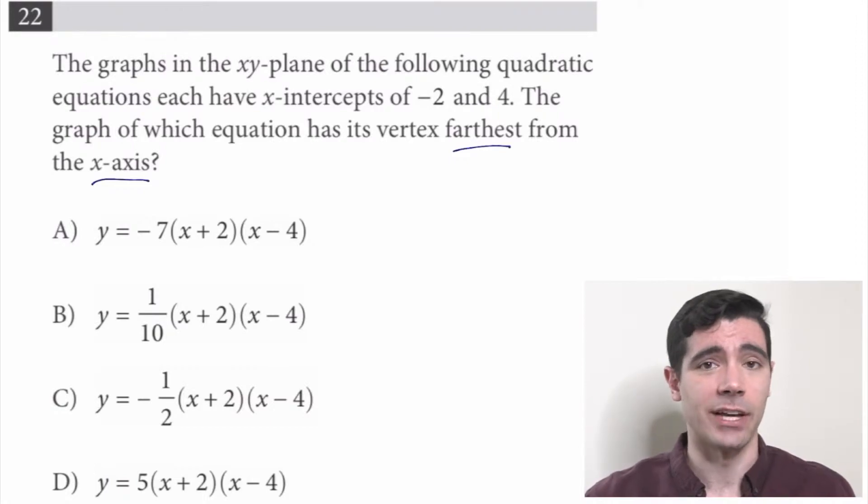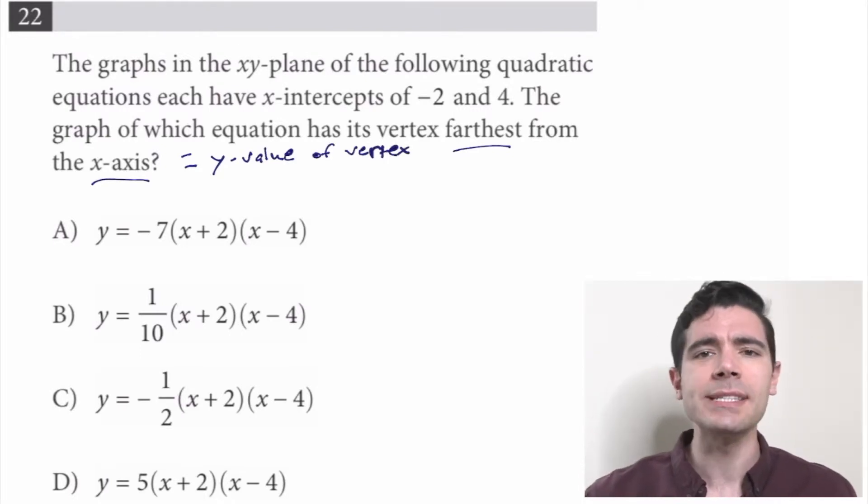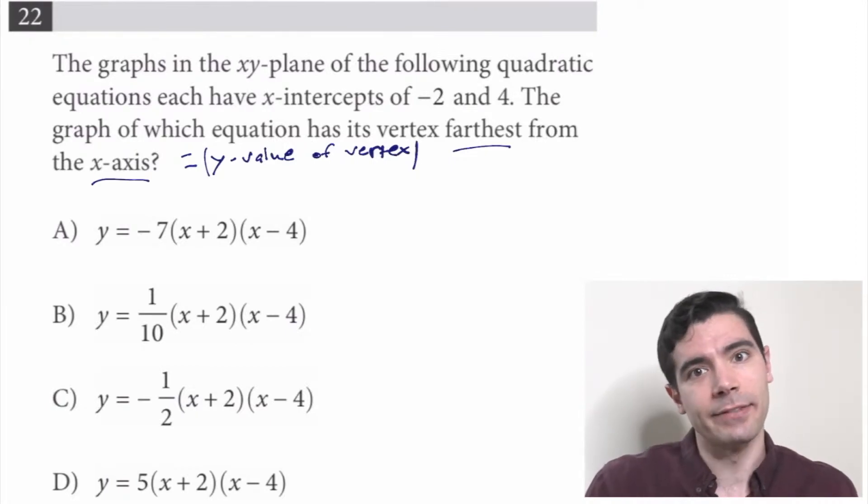Well, it's sort of an odd way of asking about the y-value of the vertex. We want the y-value that has the greatest absolute value, since that would indicate how far it is from the x-axis. Okay, well what is the x-value of the vertex? Because if we plug the x-value of the vertex into the equation, then it'll shoot out the y-value of the vertex.